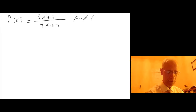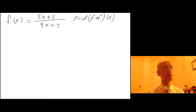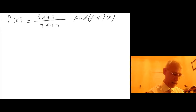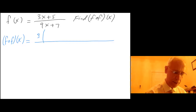We want to find f of f of x, so we will feed f into itself — the inner function is f and the outside function is f. So f of f of x equals: in the numerator, 3 times the entire f of x, which is 3x plus 5 over 9x plus 7, and then plus 5.